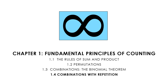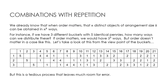In this lesson, we're going to finish our study in Chapter 1 by talking about combinations with repetition. We already know from our study in permutations that if we have n distinct objects and we're arranging them in size k, we can do that in n to the k ways. That's when order matters.